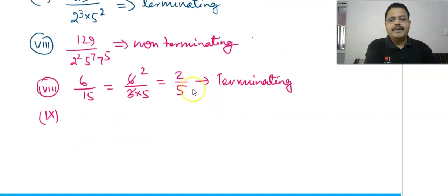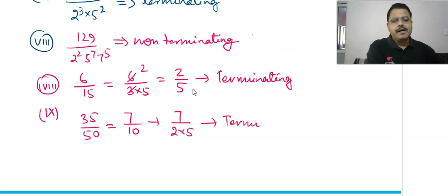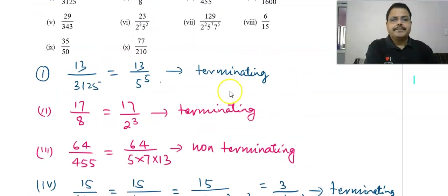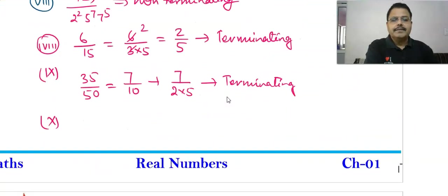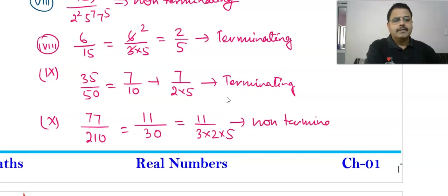Question 9: 35/50. Cancel by 5 to get 7/10. Since 10 = 2 × 5, this is a terminating decimal. Question 10: 77/210. Cancel the common factor 7: 77/210 = 11/30. Now 30 = 2 × 3 × 5 — since there is a factor of 3, it is non-terminating.